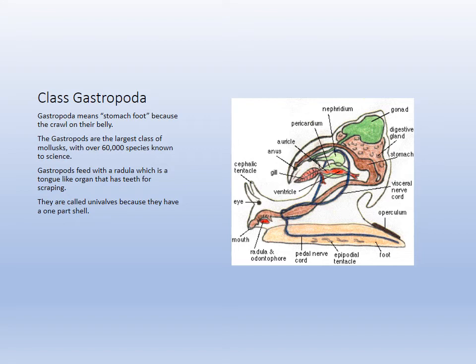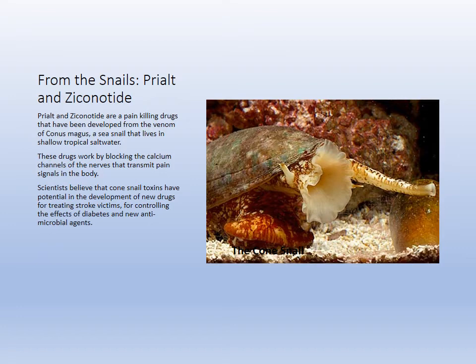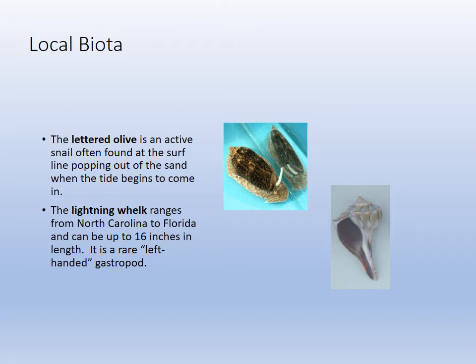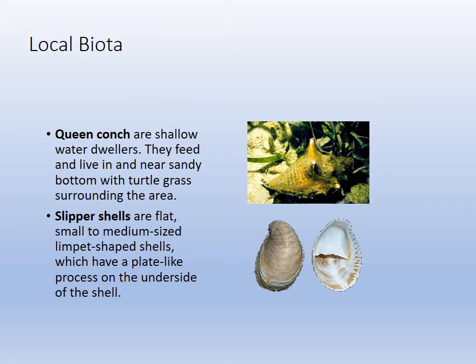Gastropods are the univalve, radula-having snails. The more complex ones have lungs instead of gills — we do have land snails as well. Cone snails are venomous, and painkillers have been made from this venom. Local species include the moon snail (now called the shark's eye), the horse conch (our Florida state shell) with beautiful orange meat, the lettered olive, the lightning whelk (the only left-handed shell in our area), the queen conch a little south of here, and the slipper snail.